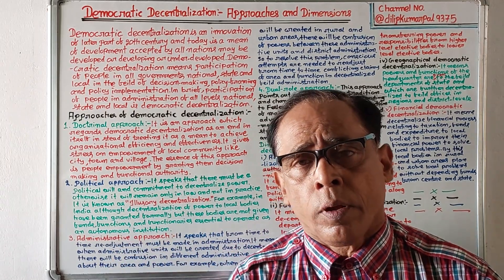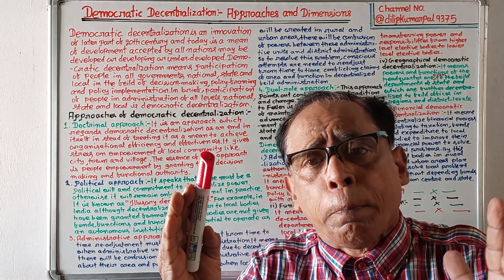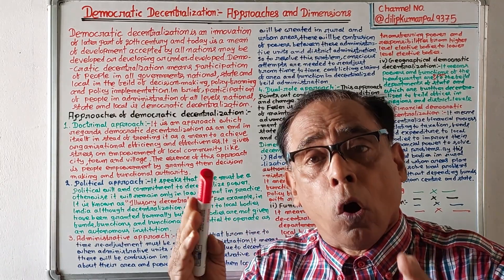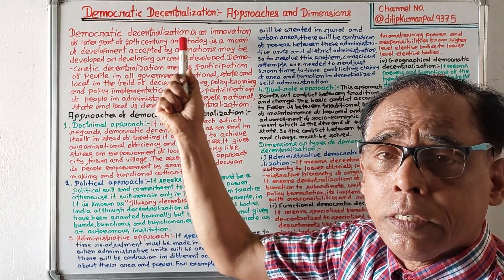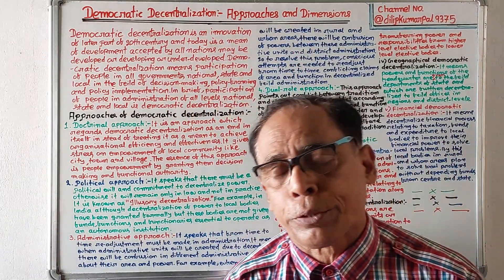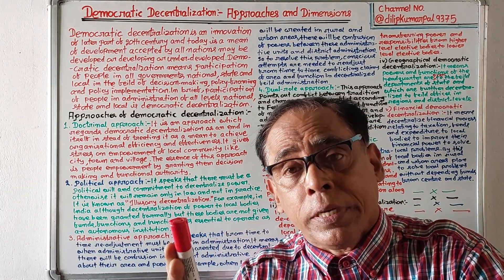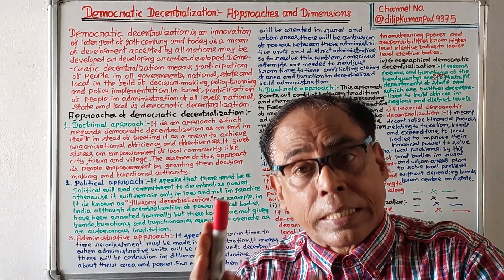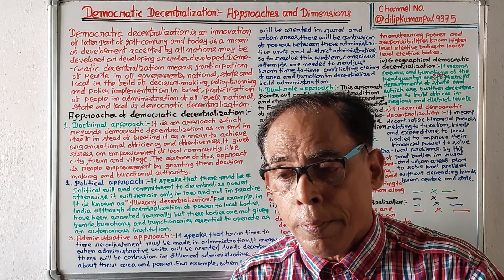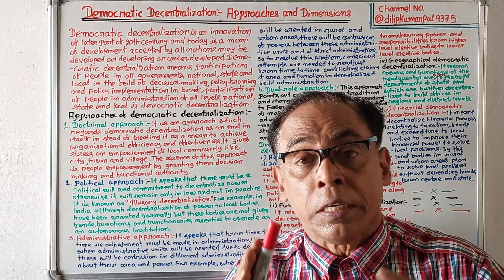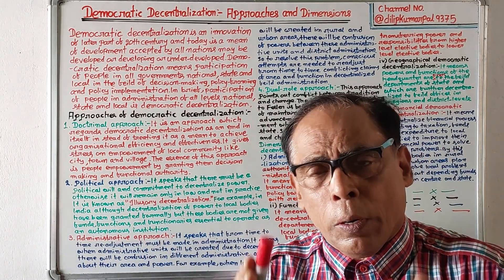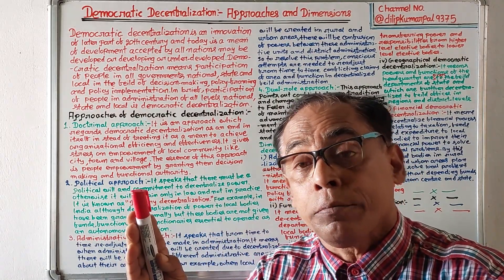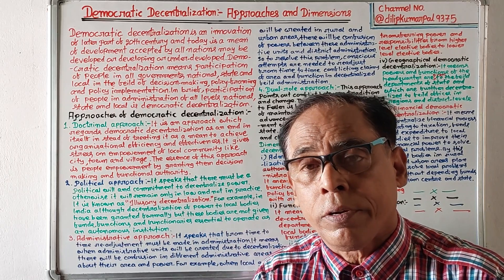Hello viewers, I am Mr. Dilip Kumar Pal. I stand before you with a video on the topic 'Democratic Decentralization: Approaches and Dimensions.' This topic is found in the plus three second semester general elective paper, the name of the paper is Governance Issues and Challenges.